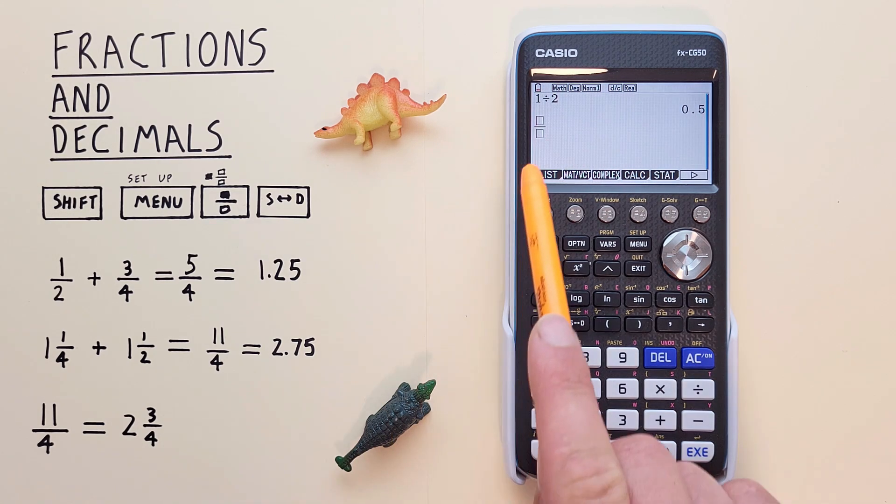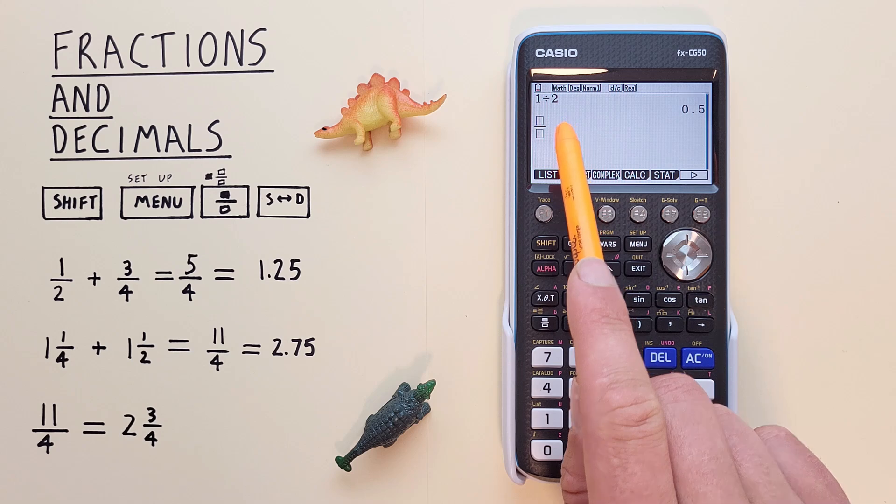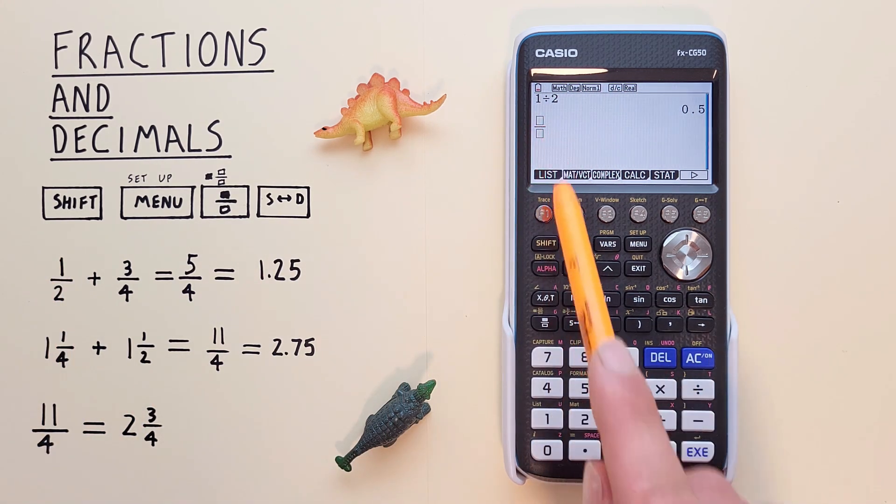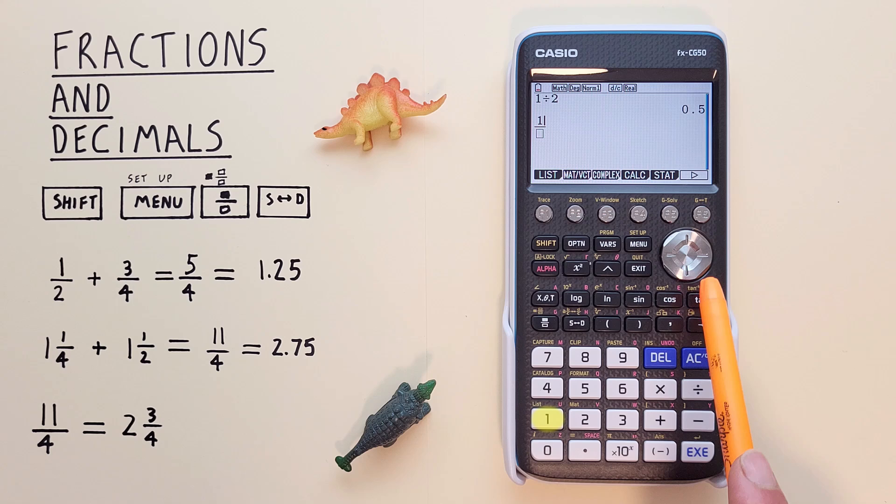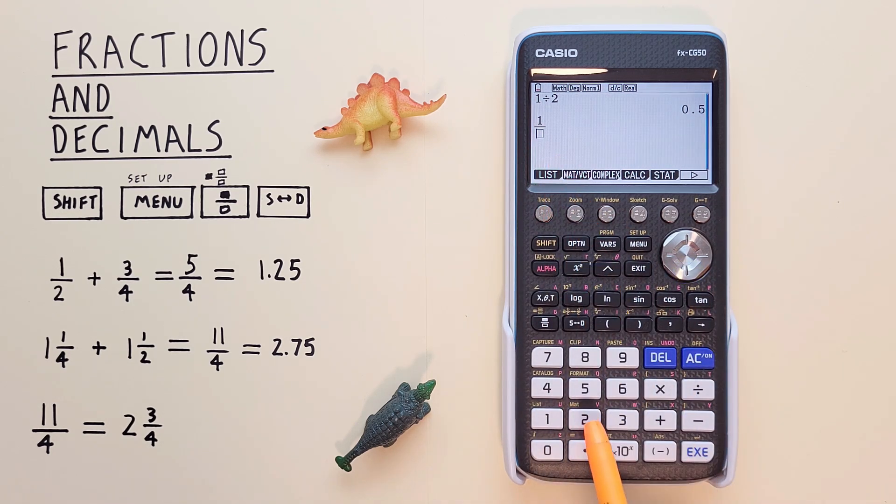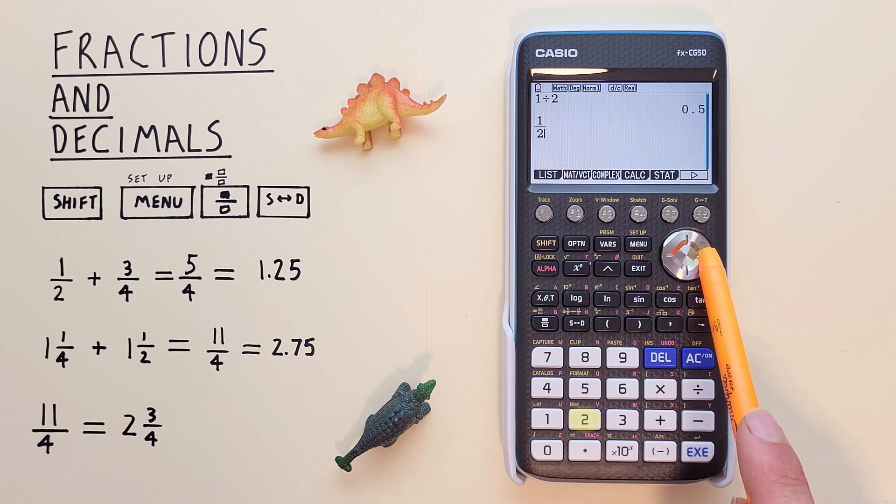And we see here two boxes. Our first number is 1 over 2. So for the top box, we press 1, scroll down to the bottom box, and then enter 2 there. And then scroll to the right, out of our fraction.